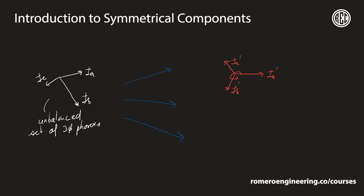The negative sequence set is also balanced — all three phasors have the same magnitude and are spaced 120 degrees apart. However, for an ABC rotation system, the negative sequence set rotates in the opposite direction. So what was the B phase location in the positive sequence becomes the C phase in the negative sequence, and vice versa — giving us IC negative sequence and IB negative sequence in those positions. The B and C phase locations are opposite between the positive and negative sequence sets.